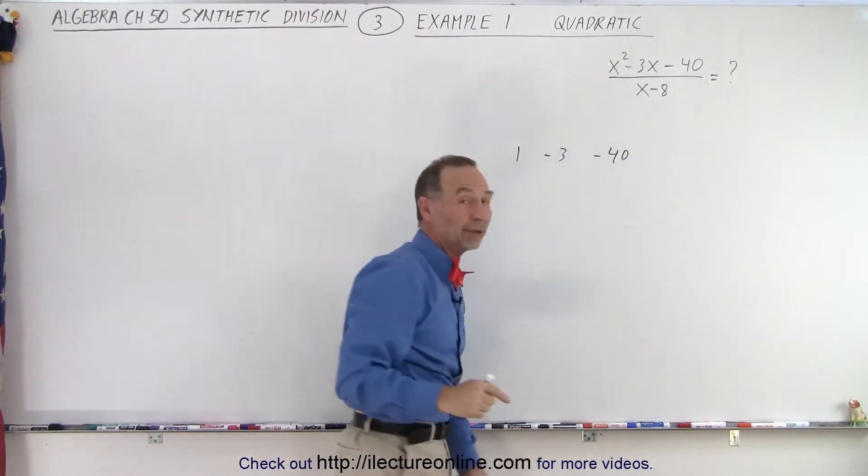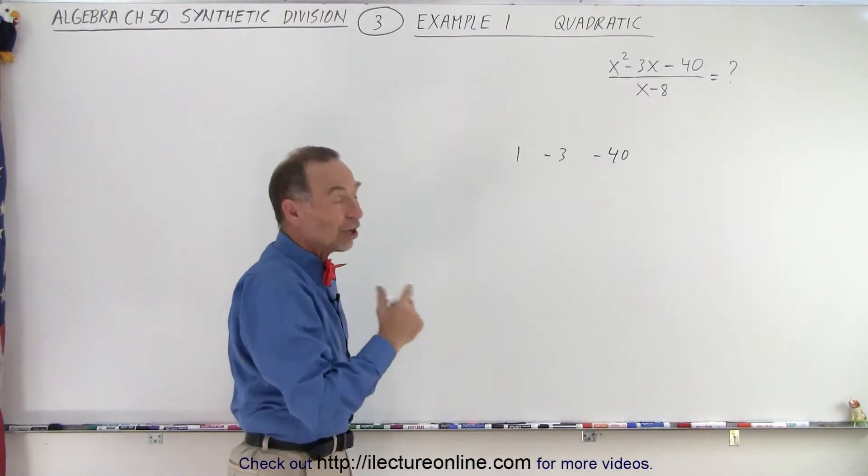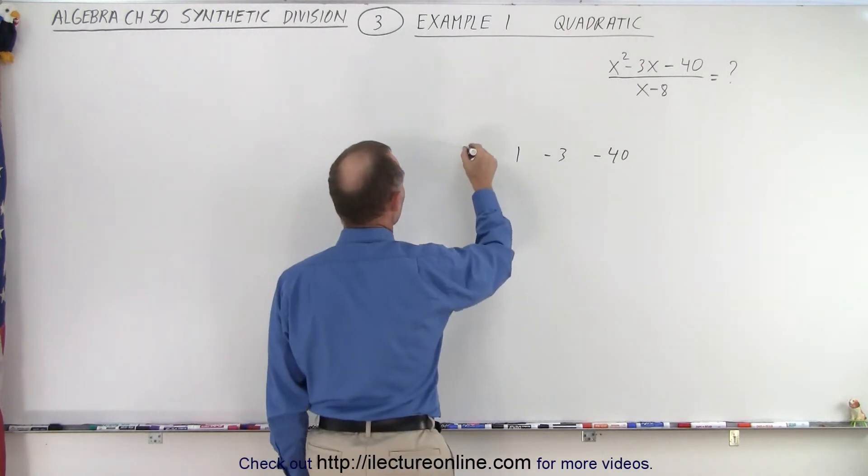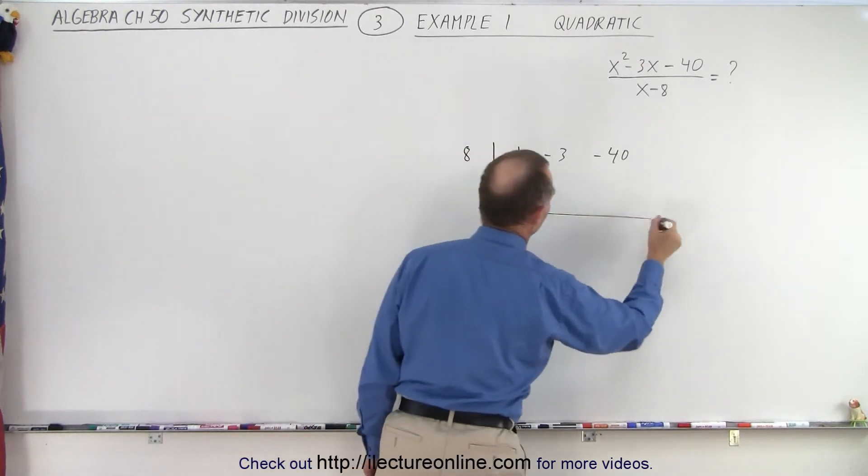Then we take the coefficient of the number in the denominator and we change the sign. So negative 8 becomes a positive 8. So we put that here then we put a line here and the line there.